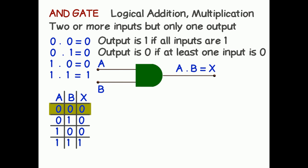Here we can see when A is 0 and B is 0, then X is 0. When A is 0, B is 1, then X is 0. When A is 1 and B is 0, then X is 0. When A is 1 and B is 1, then X is 1.